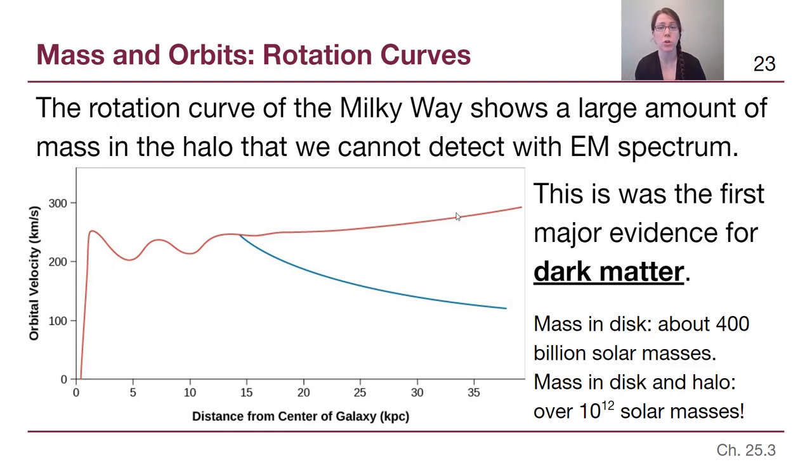We go to a trillion solar masses of material that we can account for using gravity, even though we're not counting it with light that we're receiving from it. So it's a really big difference and it's really important for us to recognize.